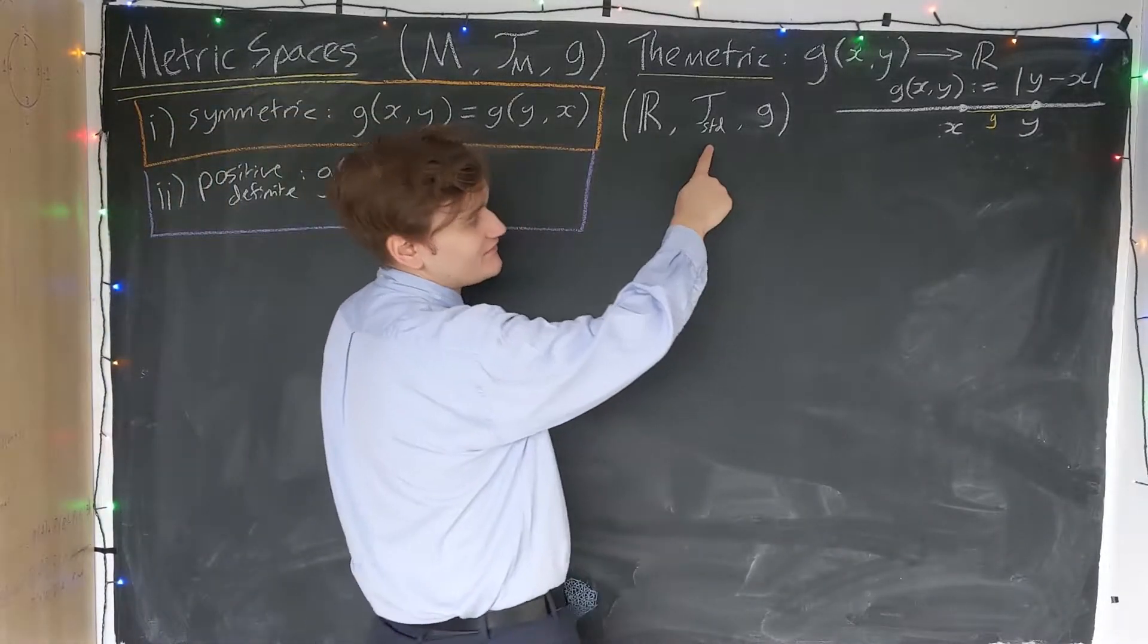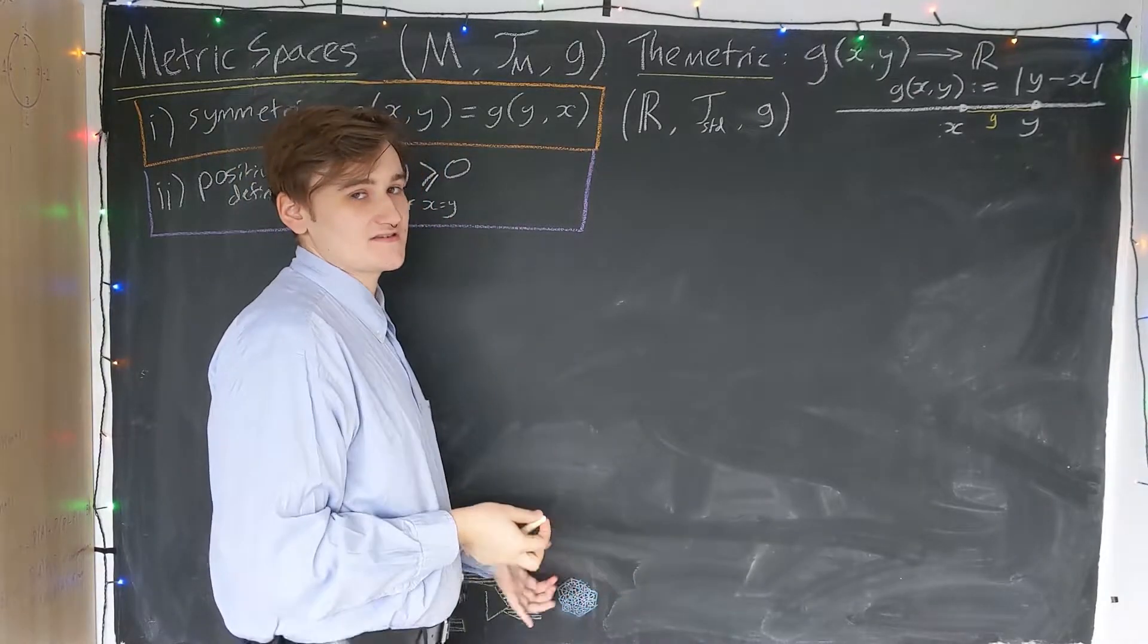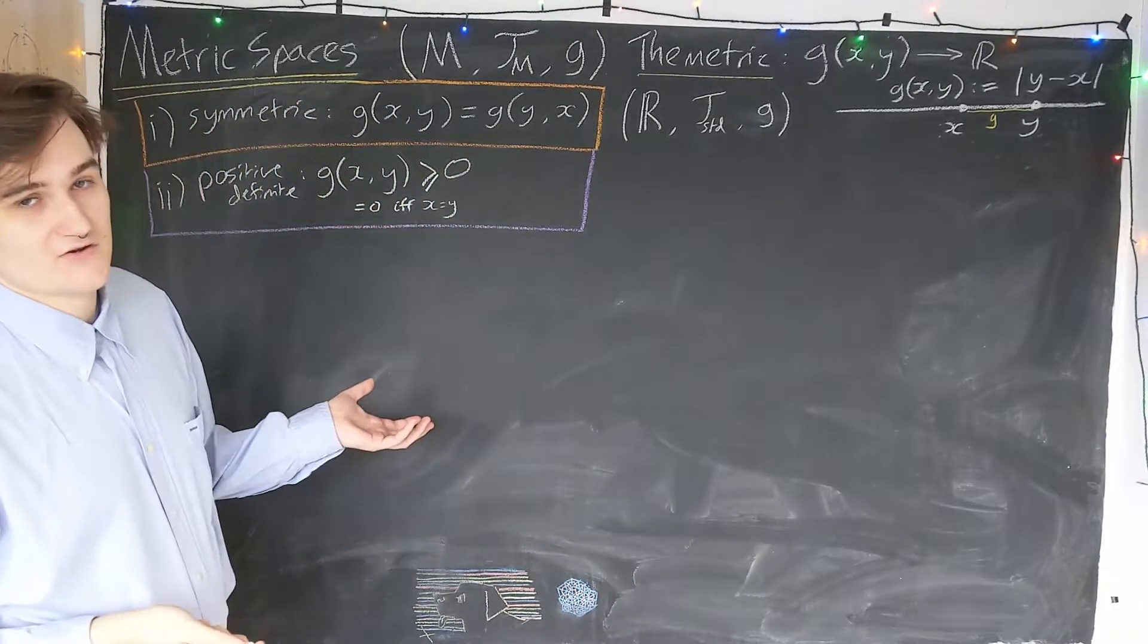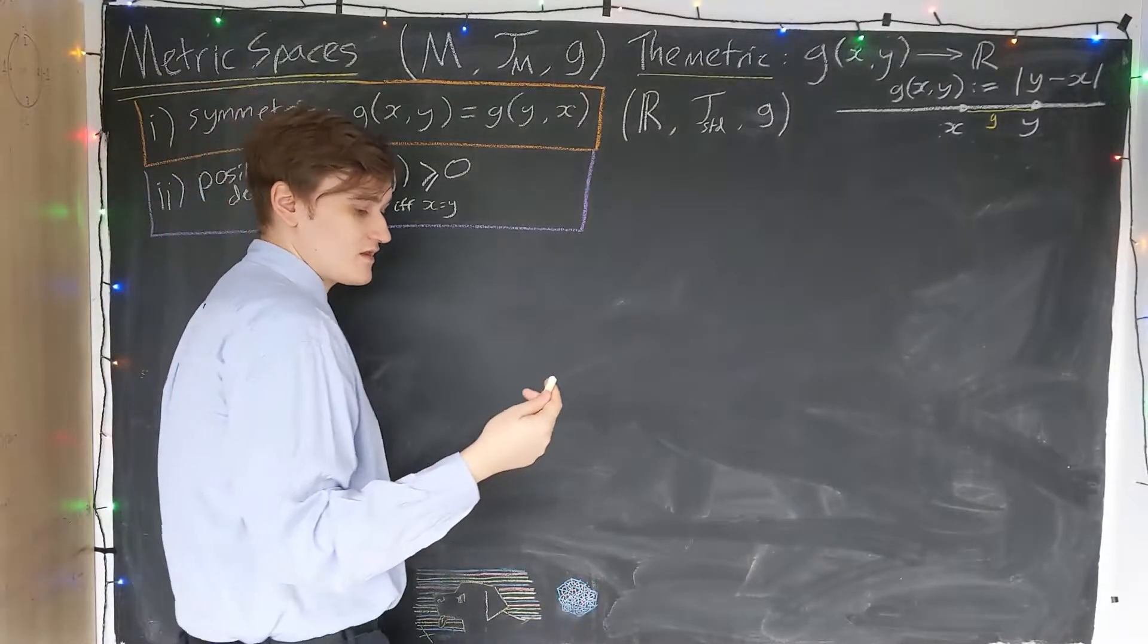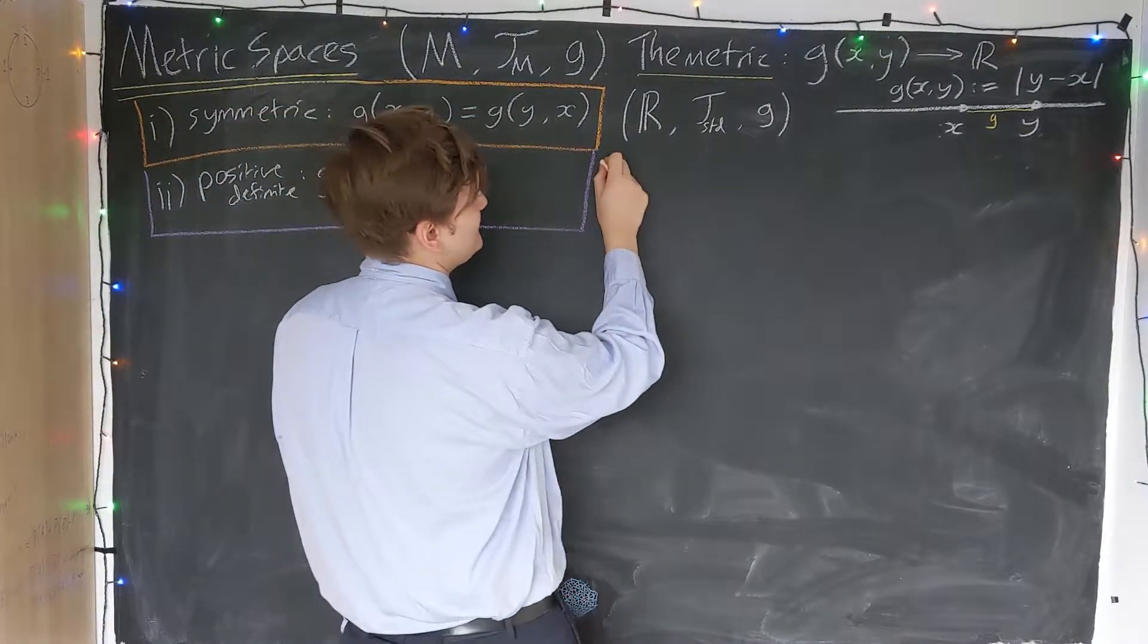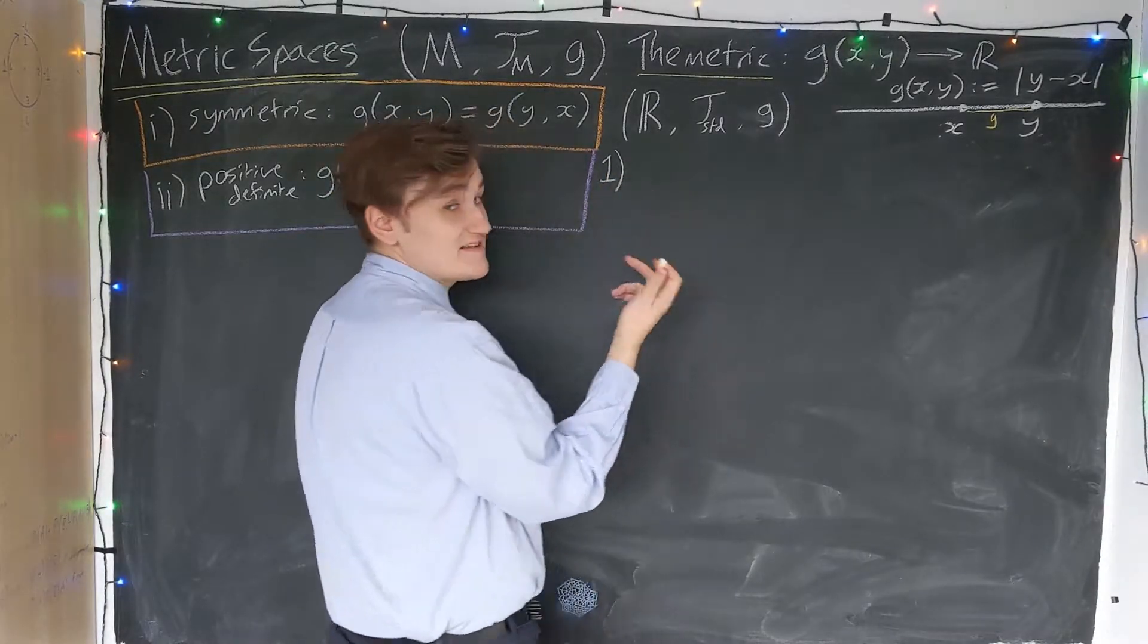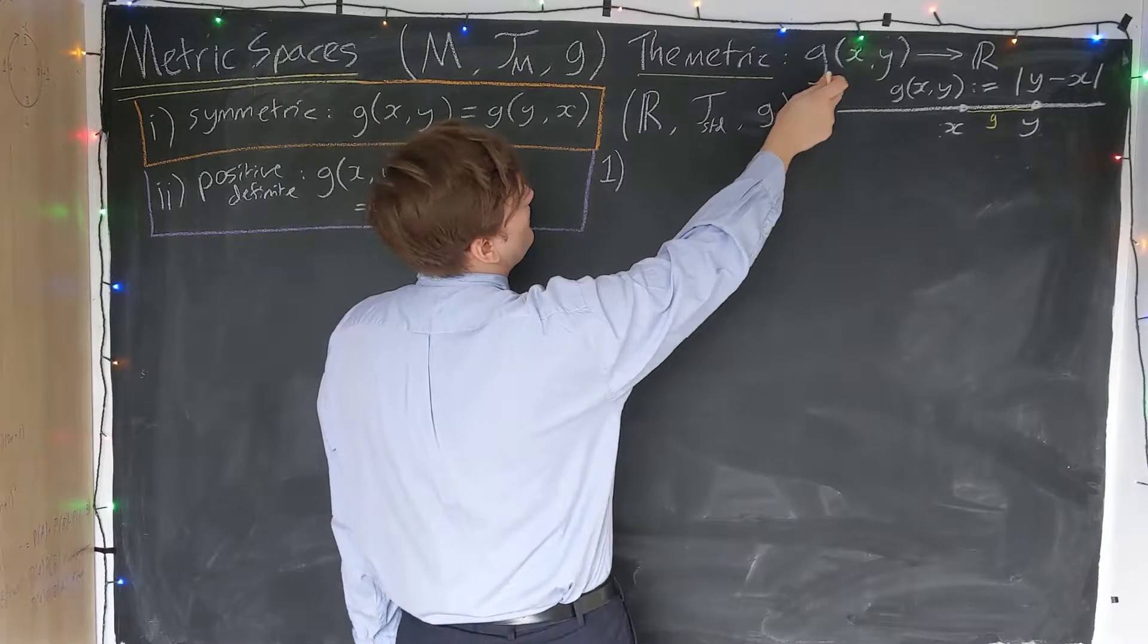This is the real numbers with the standard topology. We can give a reinterpretation of the standard topology using a metric space and using a metric. If we remember how we constructed the standard topology, we first need to say, what is an open ball? Well, we can easily define an open ball now using our metric.